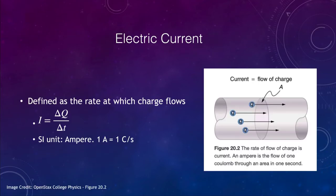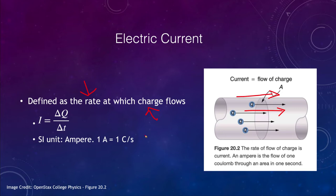First of all, we want to look at the definition of electric current, which is defined to be the rate at which charge flows. So in the wire here, electrons will flow through the wire, and how fast they flow through it tells you what the current is.